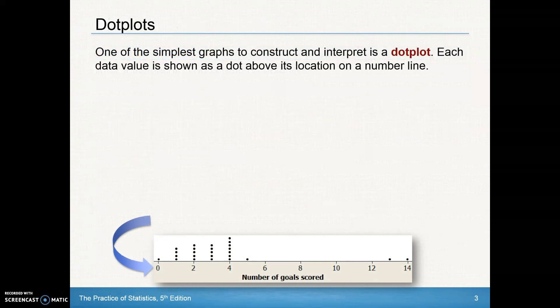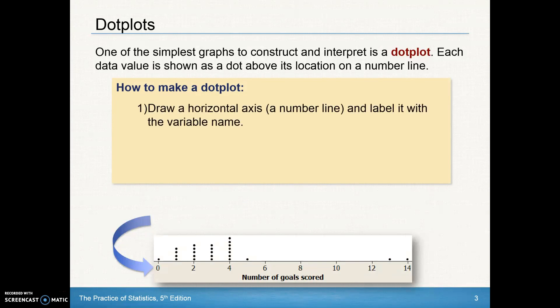We'll start with our first graph of quantitative data called dot plots. It's one of the simplest graphs to construct, and what is done is each data value is shown as a dot above its location on a number line, as we see down here below. How do we make this dot plot? First of all, we should always draw the horizontal line across your paper and then label it with a variable name. So we make sure we get our label down here. Don't have to have any label on the y-axis, just a label on the x-axis.